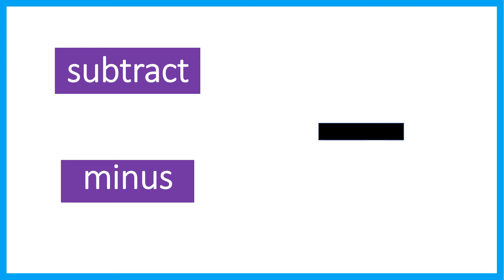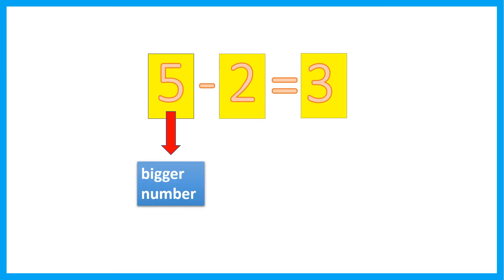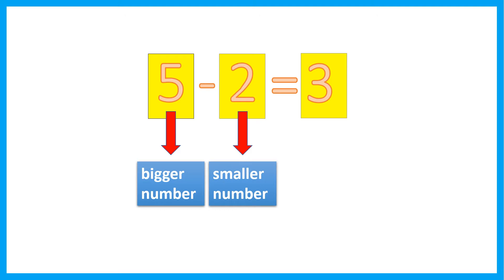This is the symbol for subtract. Sometimes we call it minus also. Let's look at the first example: 5 minus 2 equals 3. This is the number sentence. When we minus, we start with the bigger number, and then we minus the smaller number, and we will get the difference.